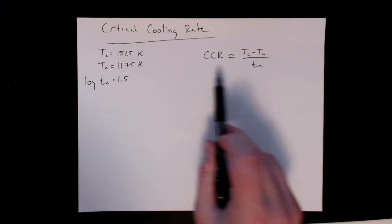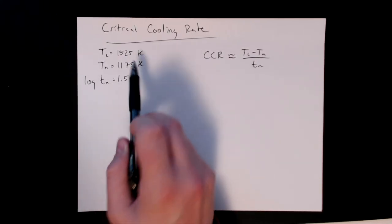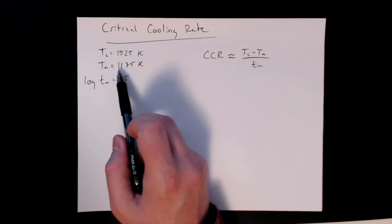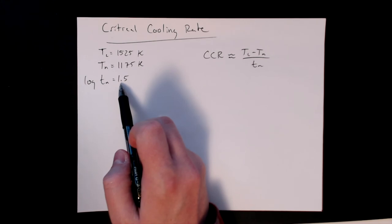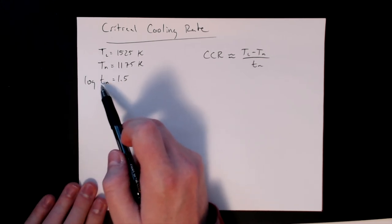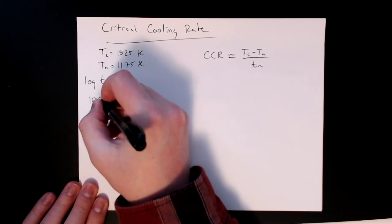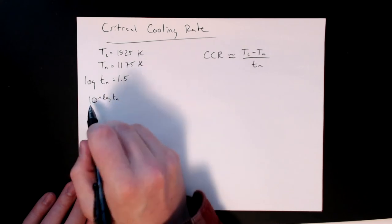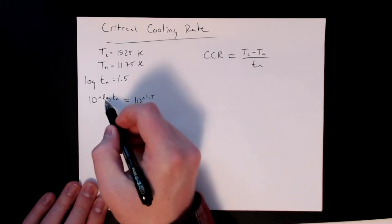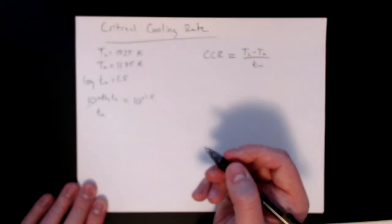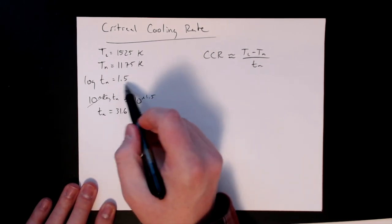Let's work out this calculation. These are the values that we had from the slides - the melt temperature was about 1525, the nose temperature was about 1175, and the log of the time was 1.5. The first thing I need to do is get this instead of log time to get the time. We can multiply both sides or take the exponent of both sides of 10, so 10 to the log TN equals 10 to the 1.5. This will cancel out the log and the log base 10, and this gives us the nose time is equal to 10 to the power 1.5, and that is about 31.6 seconds.